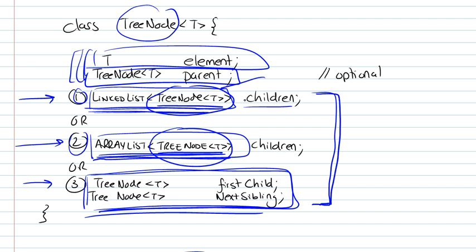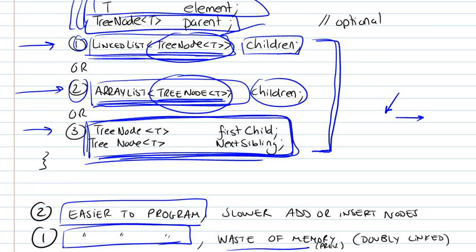You could use a linked list to represent the children of a particular node, or you could use an array list to represent the children, or you could define your own pointers and represent the first child and the next sibling. This is called the first child and next sibling implementation.